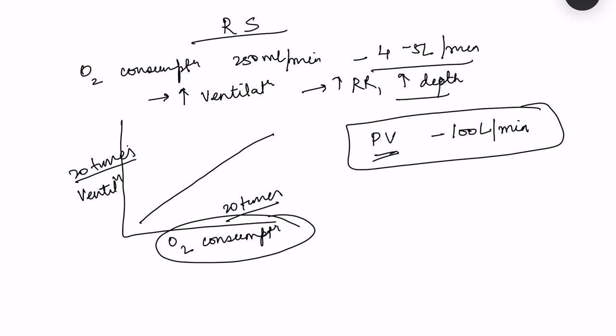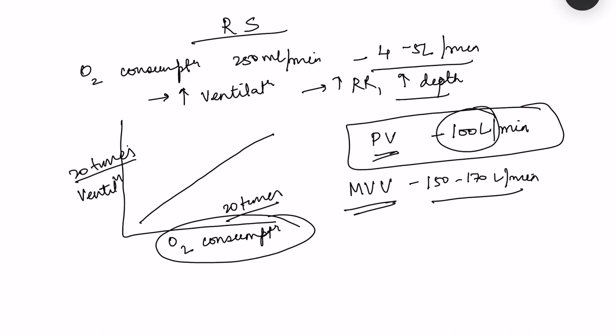The maximum we can ventilate is called maximum voluntary ventilation — the maximum ventilation achievable with maximum rate and maximum depth of ventilation — which is approximately 150 to 170 liters per minute. At maximal exercise, pulmonary ventilation is approximately 100 liters per minute, so there is still a reserve of approximately 50 liters per minute.